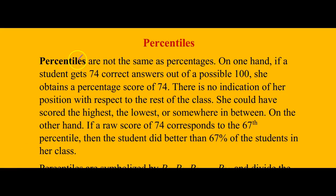The next is percentile. Percentiles are not the same as percentages that we are used to. For example, if you get 74 percent, that's the raw score, but percentile tells us the position of the person. So you have to find what this raw score is in the percentile to know how well the student did compared with the rest of the class.